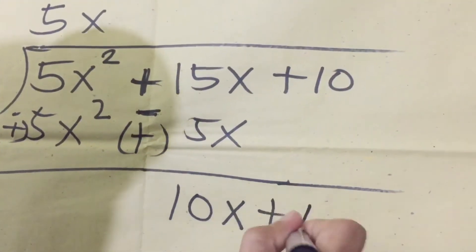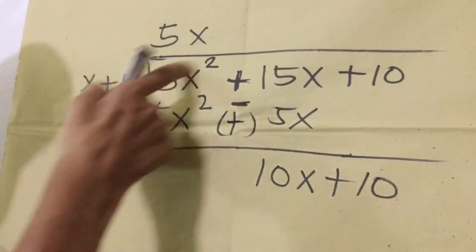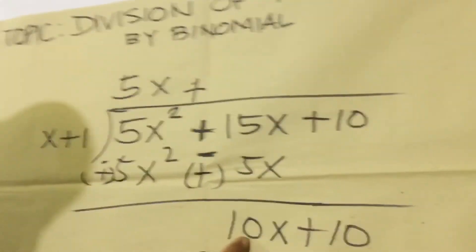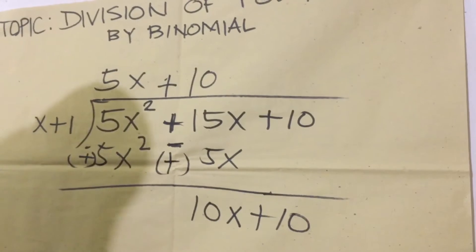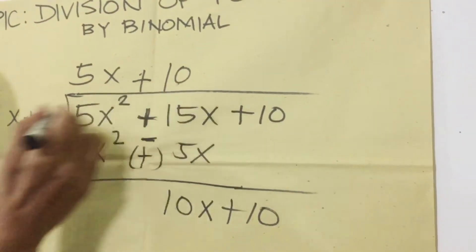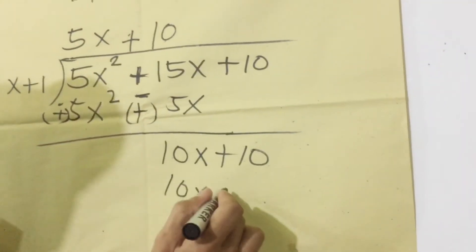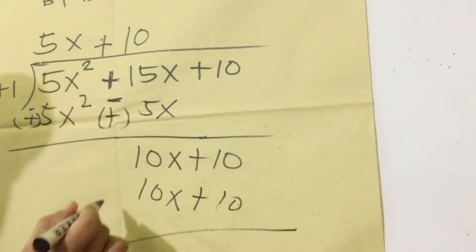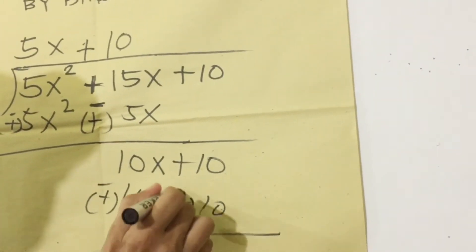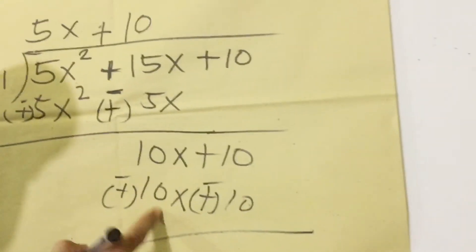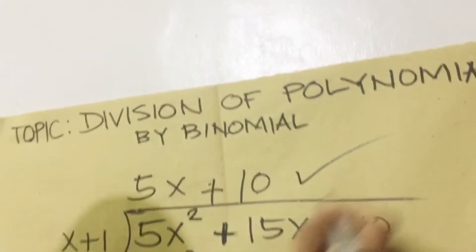Then bring down the constant. We are going to estimate again — it should be positive two. So ten divided by one equals ten. Then x divided by x — the variables cancel. That will be our next quotient term. Then multiply: ten times x equals ten x. Ten times one equals ten — also positive. Then subtract — we change the sign: positive to negative. So ten x minus ten x equals zero, and ten minus ten equals zero. So there is no remainder. Therefore, our answer for the quotient is five x plus ten.